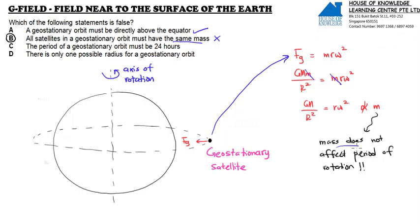So that means mass does not affect the period of rotation. So B is out.